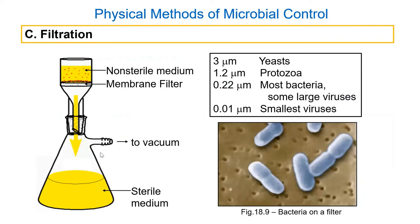Another thing we can do to get rid of organisms is filter them out. We do this sometimes in the lab - an autoclave run takes about an hour, so sometimes for small amounts of liquids I just filter them instead. You can get filters of different sizes. The most commonly used filter is 0.22 microns, which will get rid of most bacteria but probably not viruses. Why not use a really small one? Because it's hard to get things through very small filters - they can be very slow. The 0.22 micron is a pretty good compromise, as shown in the bottom right photo where bacterial cells can't fit through it.